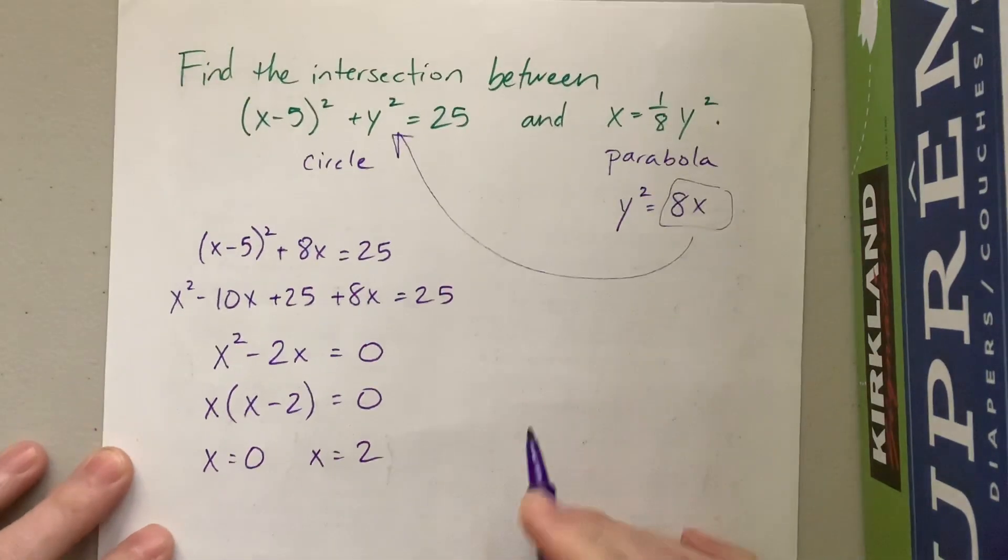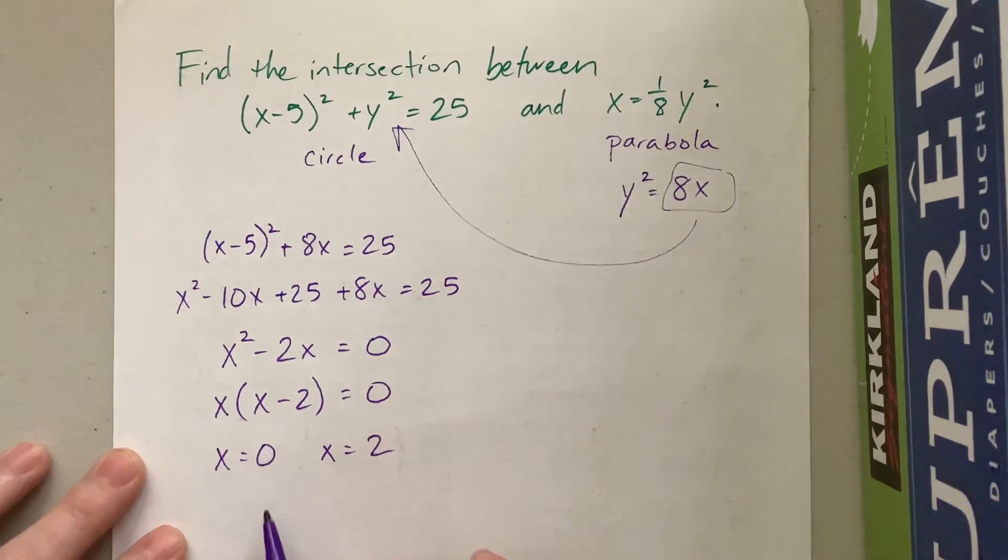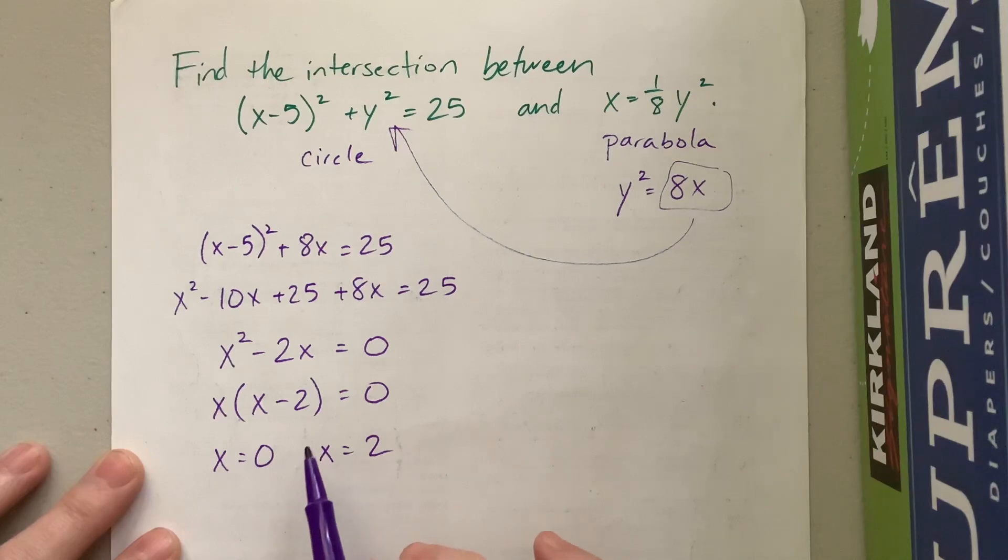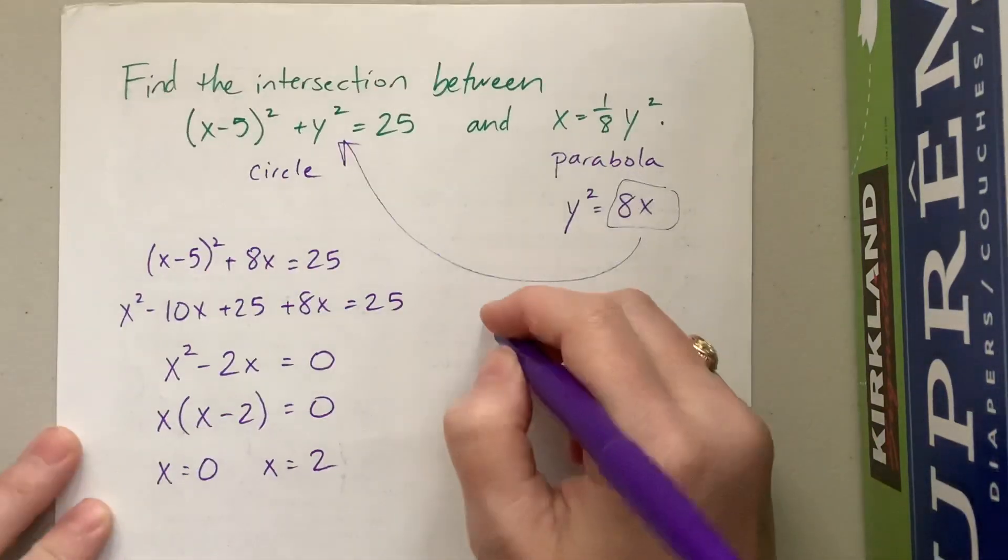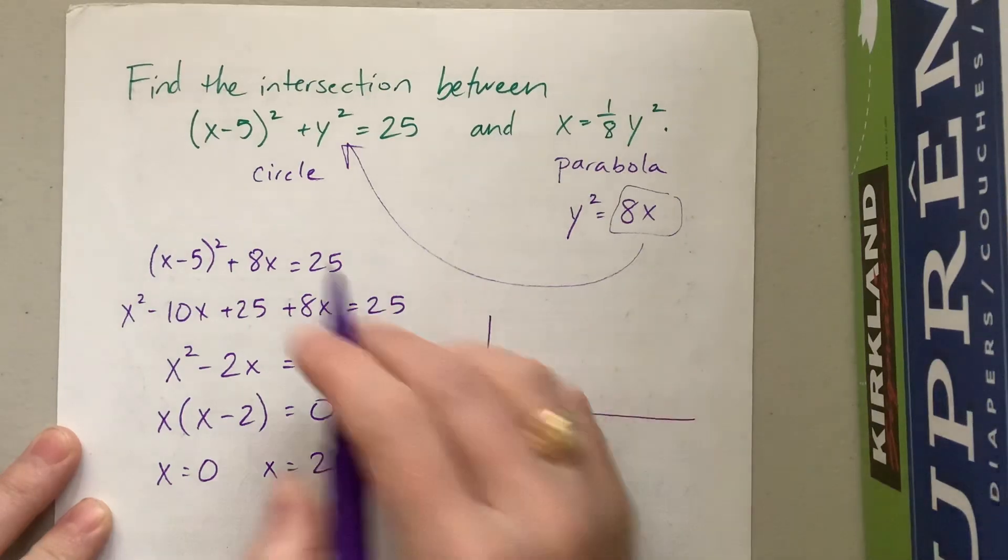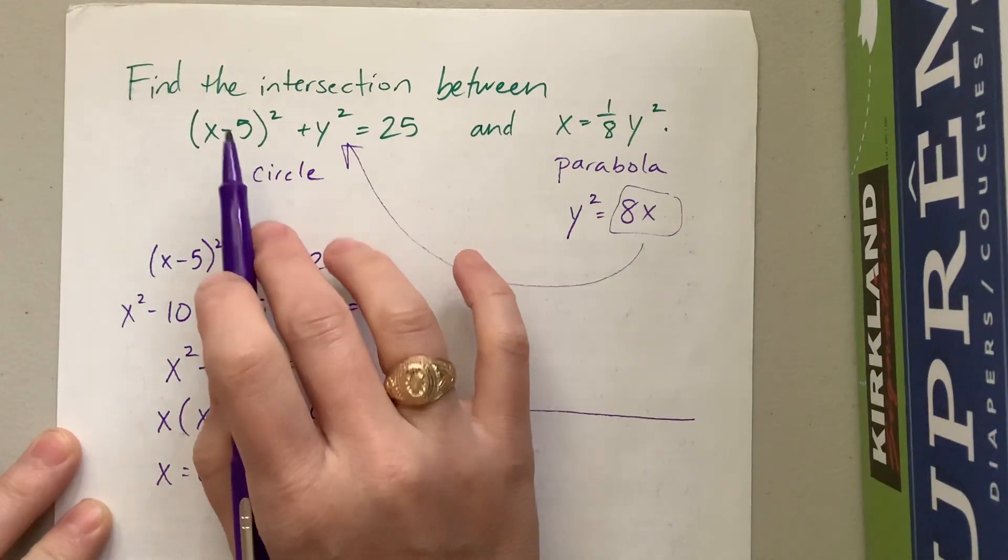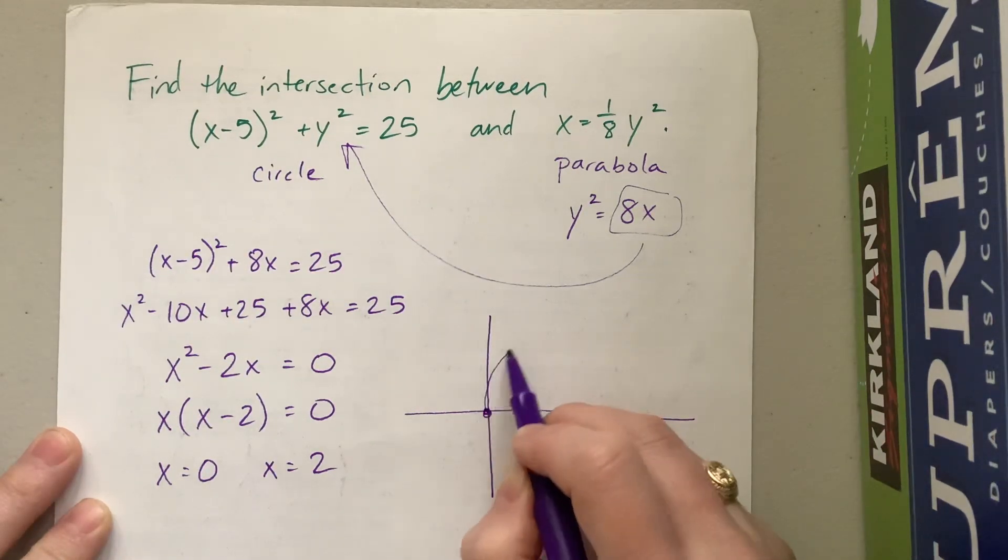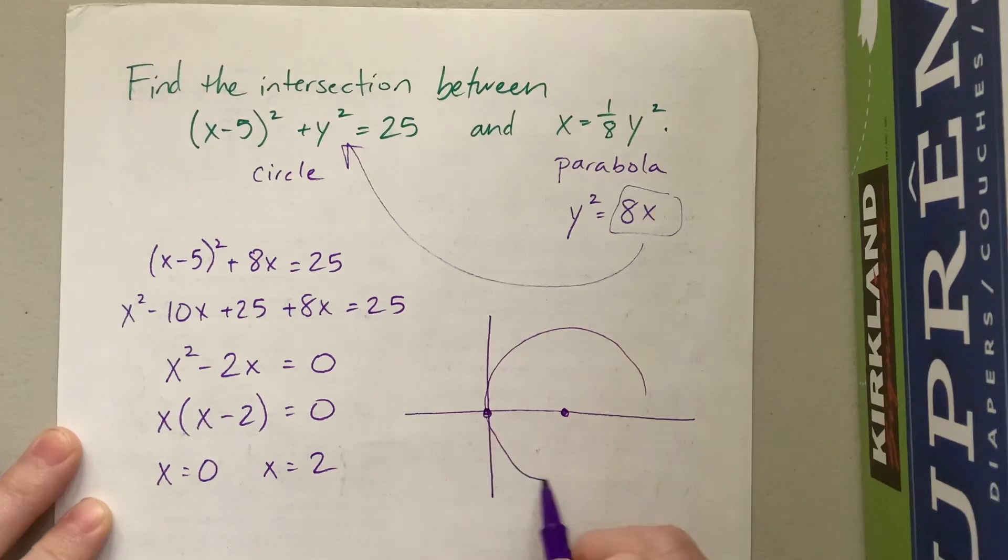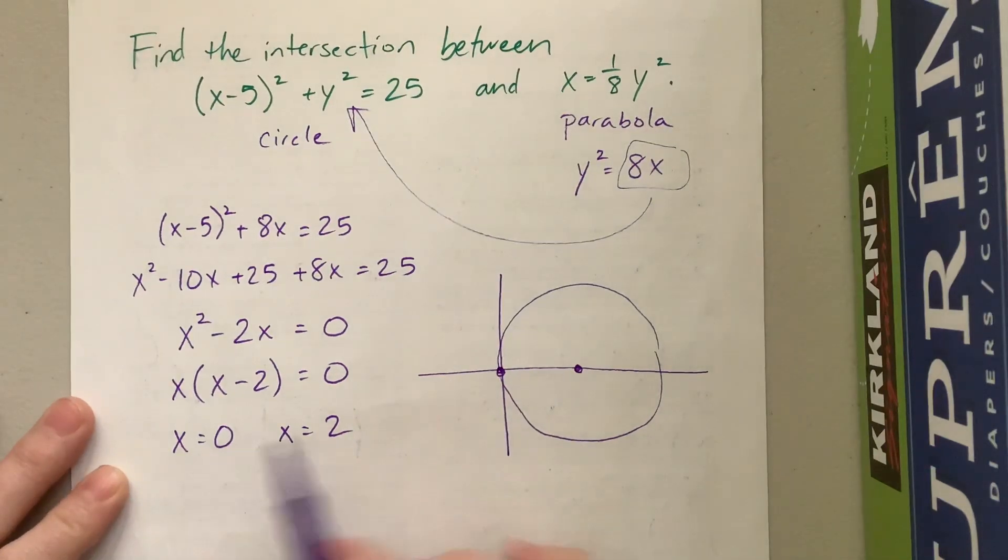So now let's think about this for just a second. We need to go back and figure out what the y values are but we also, it helps to know what's happening here. So what I see is I see a circle that's got a radius of 5 and it's centered at the point (5, 0). So 5, 0 over here and it's got a radius of 5, that means it's going to do something like that. That's actually one of my better circles.